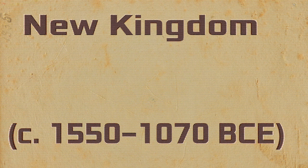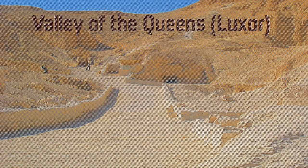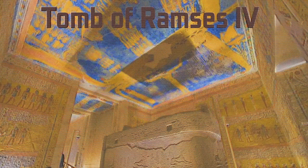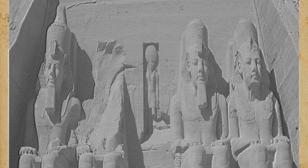The New Kingdom ushered in a new era of tomb architecture, marked by the construction of elaborate rock-cut tombs in the Valley of the Kings and the Valley of the Queens. These tombs, adorned with intricate paintings and hieroglyphic texts, served as the final resting places for pharaohs, queens, and nobles.